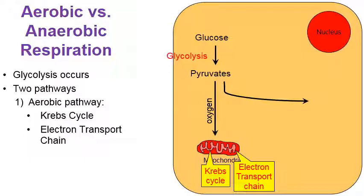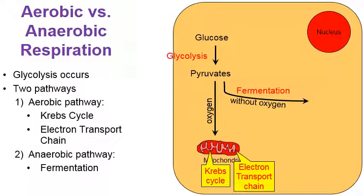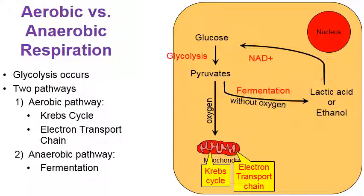But sometimes oxygen is not available. Let's follow the anaerobic pathway — this is the process that happens when there's no oxygen. This is the process known as fermentation. The pyruvates will go through fermentation and be broken down into lactic acid or ethanol, depending on the type of fermentation. When fermentation is finished, a molecule abbreviated NAD will be created, and the NAD helps to restart glycolysis.